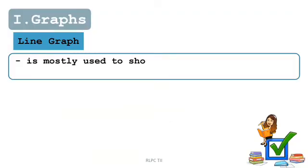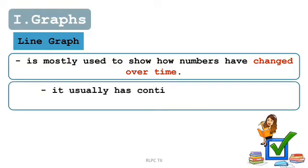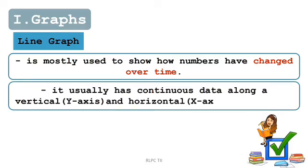Let's proceed now with line graph. Line graph is mostly used to show how numbers have changed over time. It usually has continuous data along vertical and horizontal dimensions.